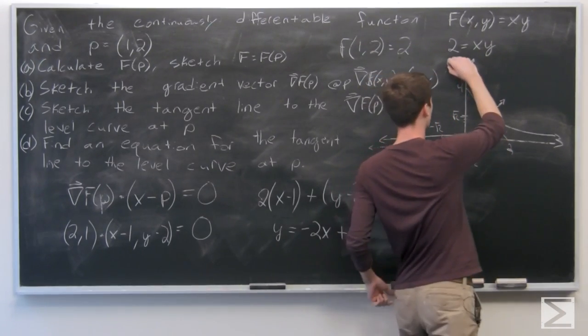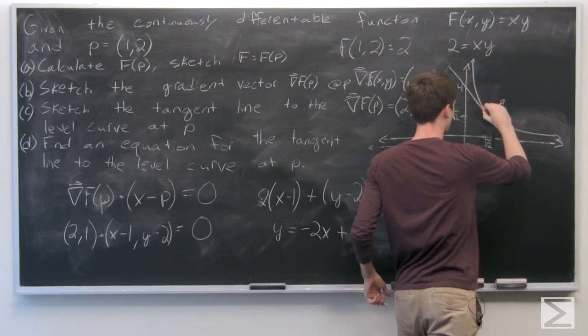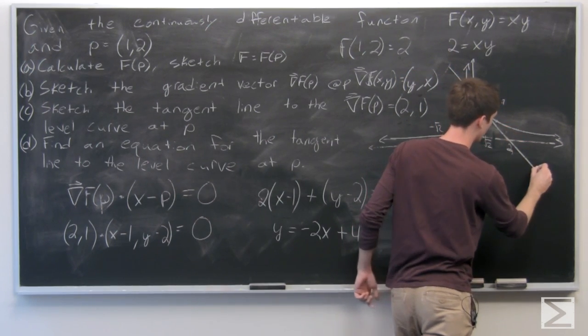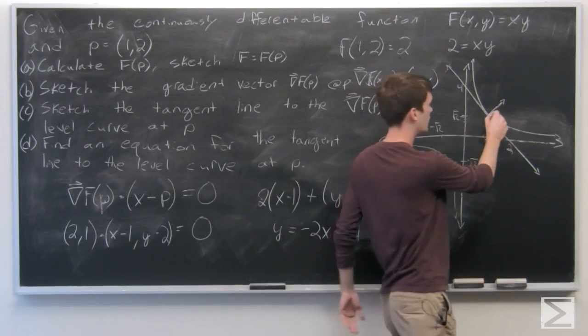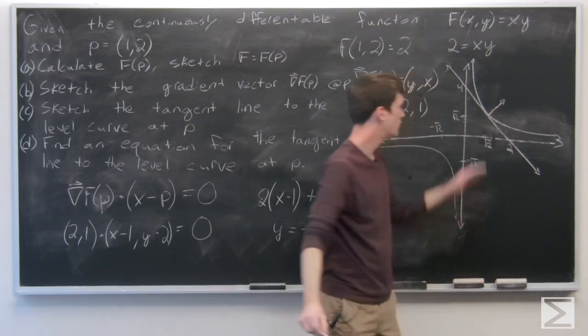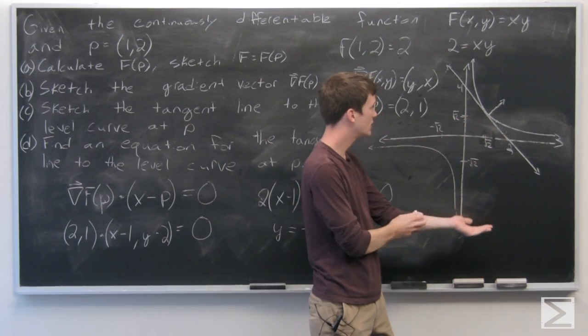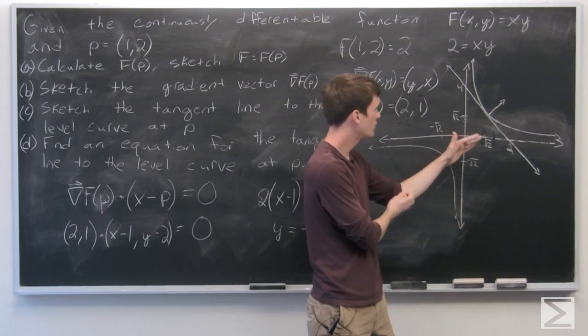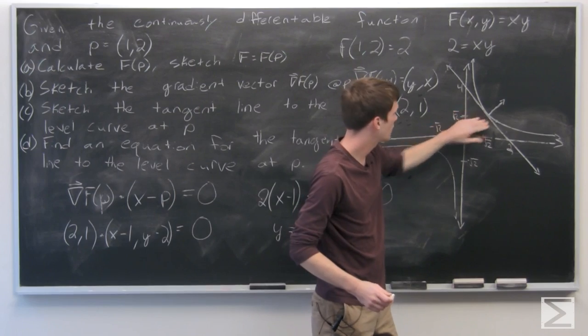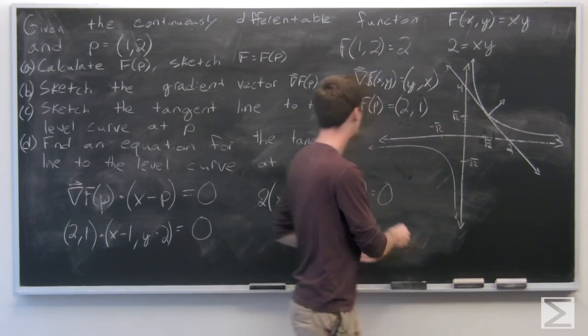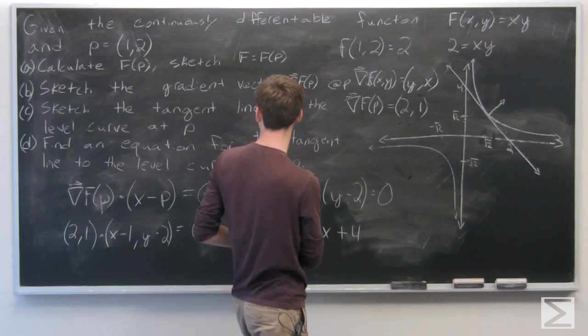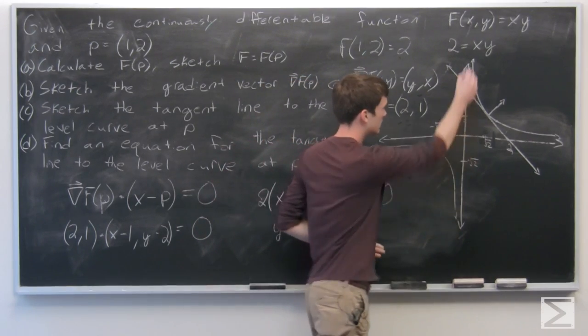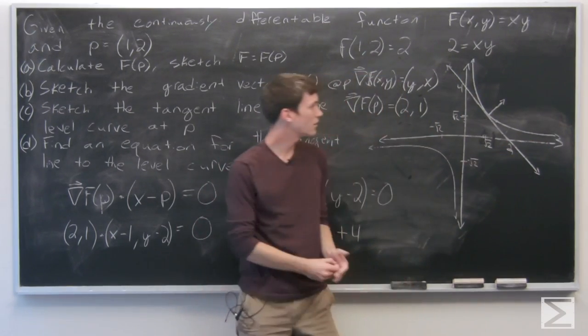Our gradient vector at the point p is pointing outwards away from the origin, and our sketch of the level set is the hyperbola given.